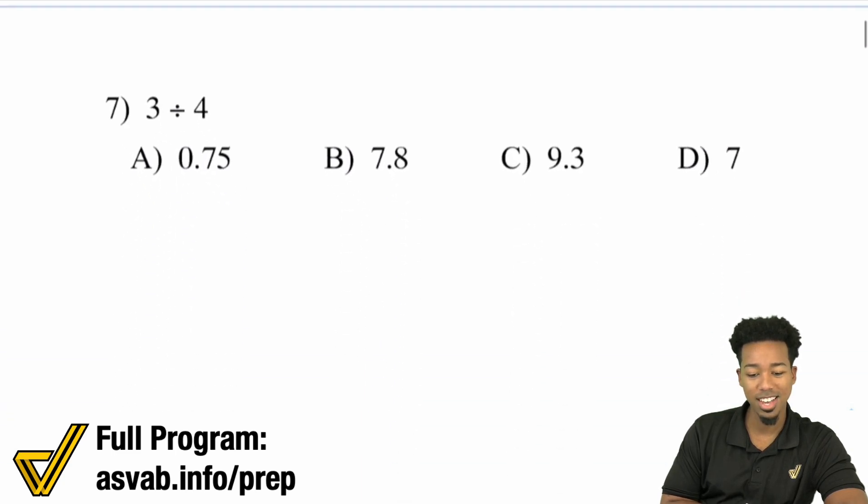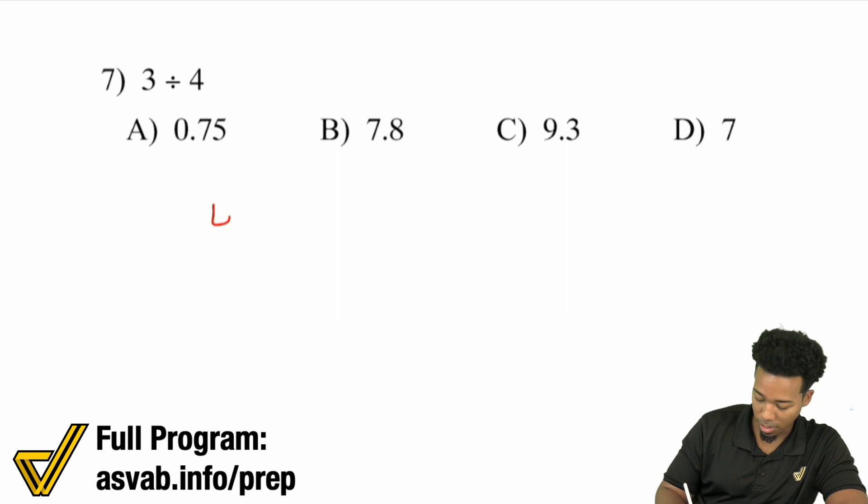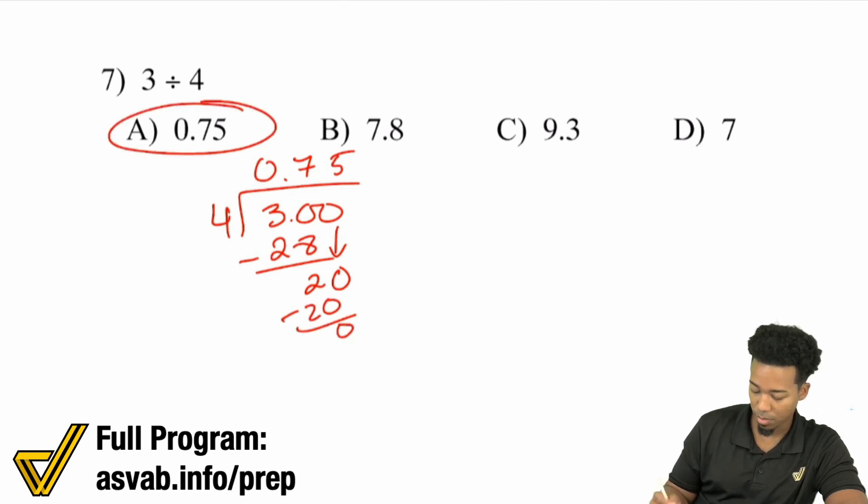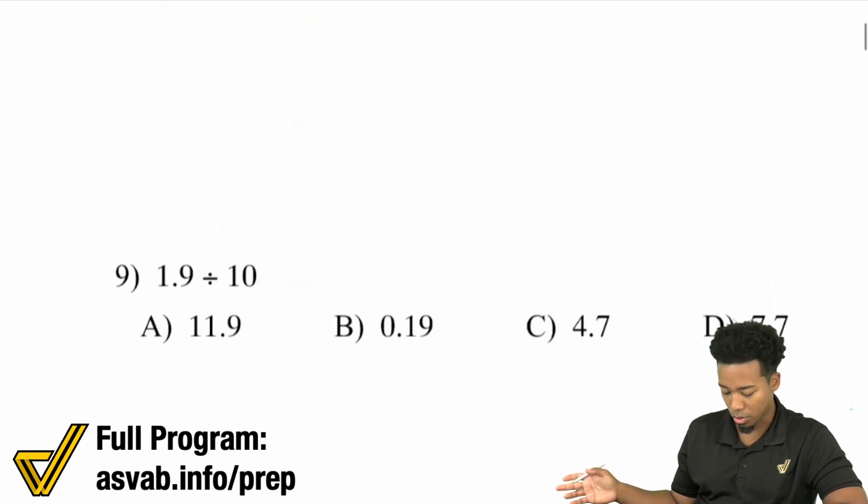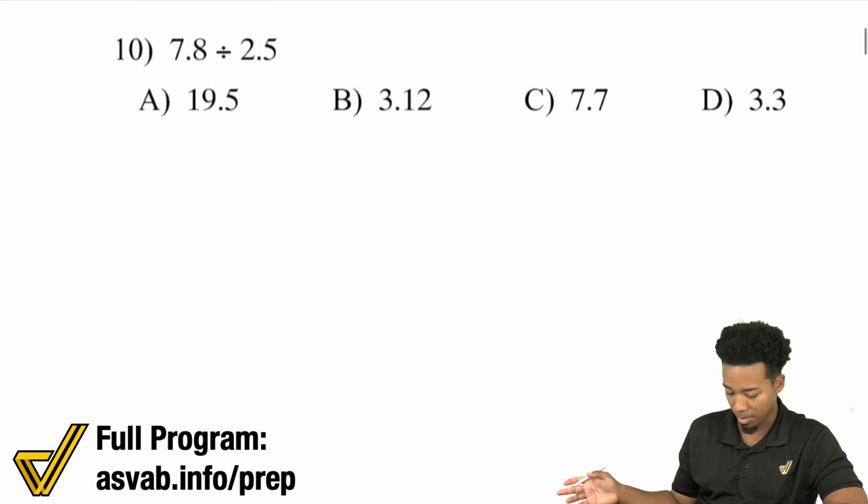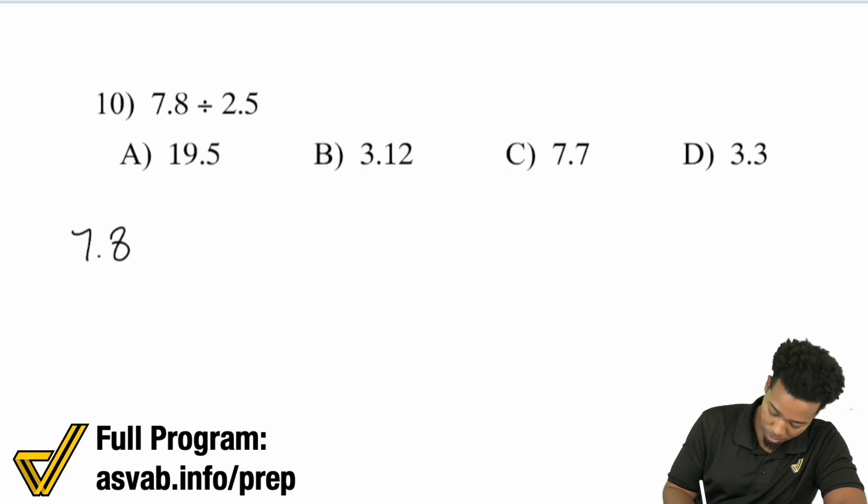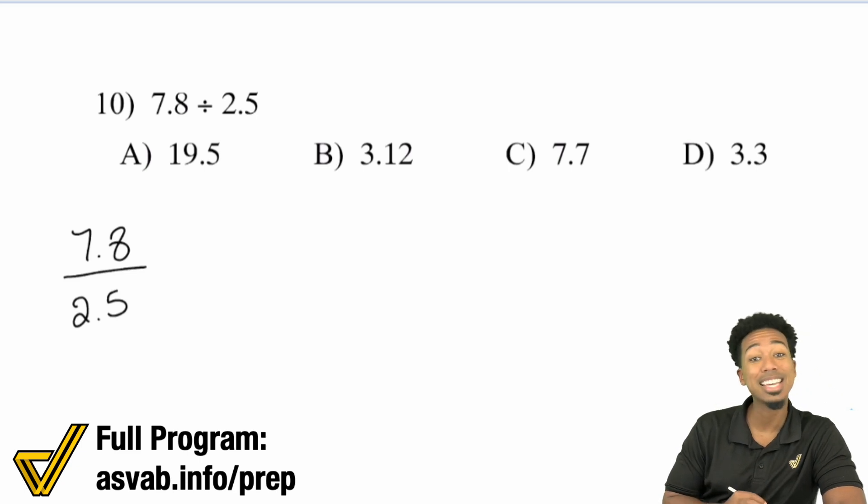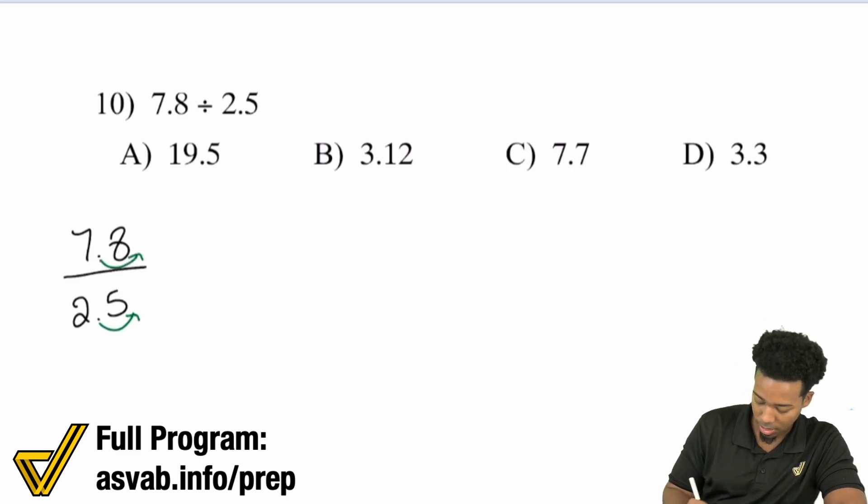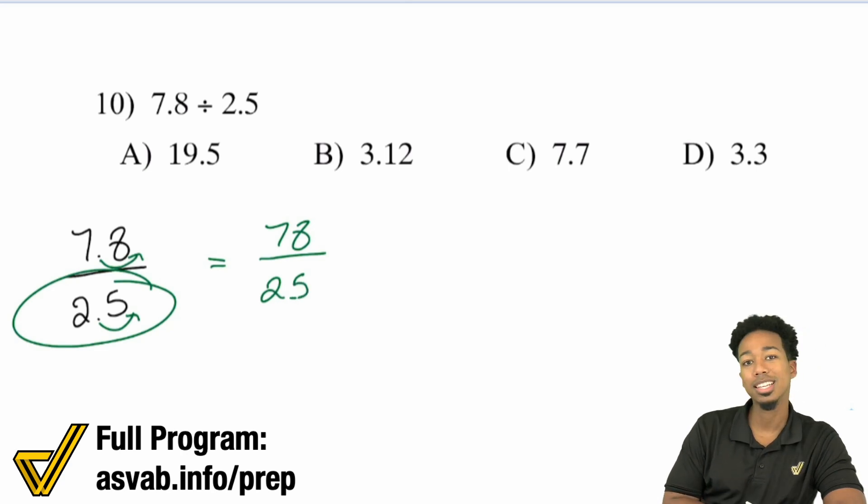Next up. 3 divided by 4. 4 into 3. 4 goes into 3, 0 times. 4 goes into 30, 7 times. Then 4 goes into 20, 5 times. And then we have 0.75. So that one was, again, a little easier. Here, 7.8 divided by 2.5. Now, what we can do is move those decimal places over at the same time. So move that over to the right once, and there to the right once. So really what you're looking at is 78 divided by 25.